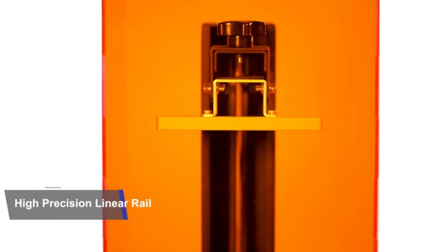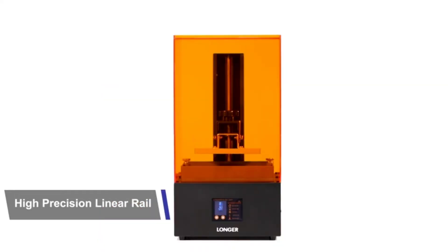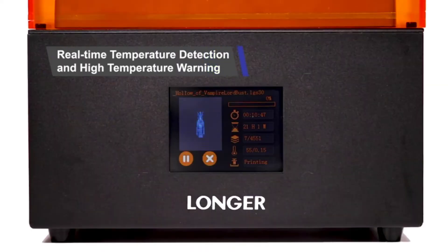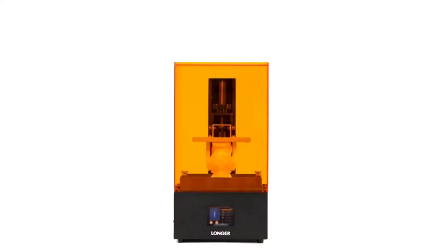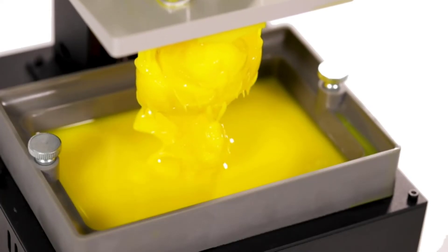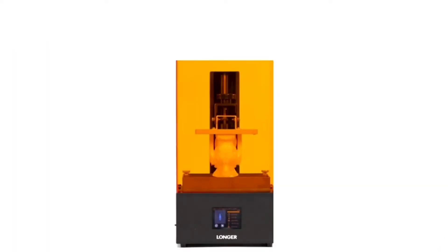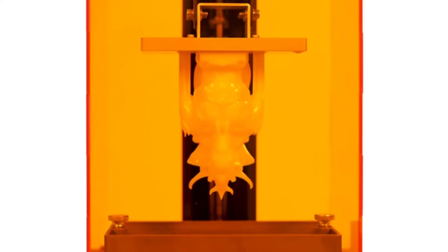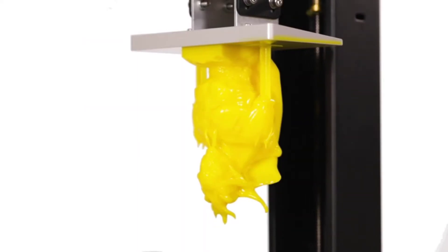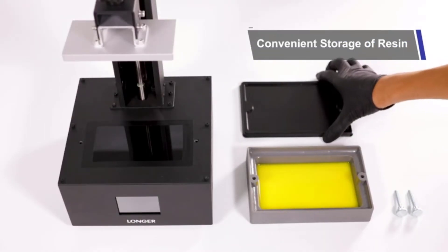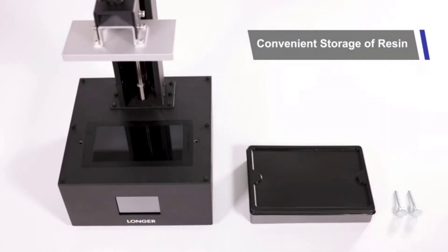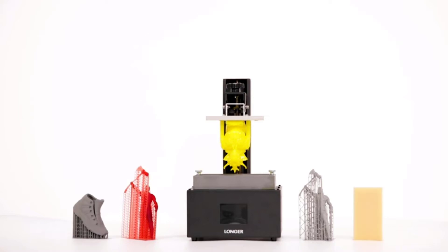What's more, Longer 3D offers a custom self-developed slicer. Sporting a slew of convenient features, including one-click support generation, Longerware is a neat SLA 3D printer slicer. And the Orange 10 is compatible with Chitubox as well. Since its proprietary slicer, Longerware, simplifies the 3D modeling slicing process, the Longer 3D Orange 10 is the best budget resin SLA 3D printer for beginners.